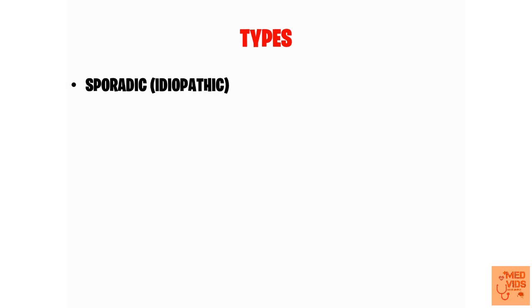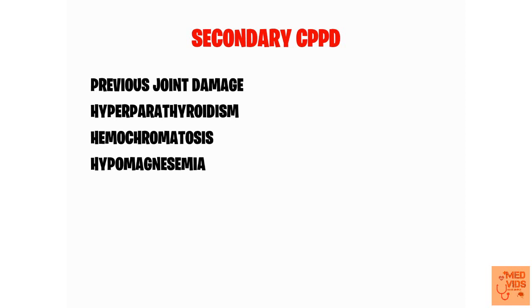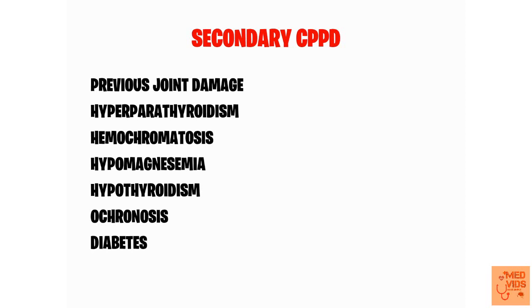Sporadic cases are usually idiopathic, for which the exact cause is not known. For secondary calcium pyrophosphate crystal disease, there are various causes including previous joint damage, hyperparathyroidism, hemochromatosis, hypomagnesemia, hypothyroidism, ochronosis (a metabolic condition where there is excess homogentisic acid deposited in tissues), and diabetes can also predispose the patient to pseudogout.